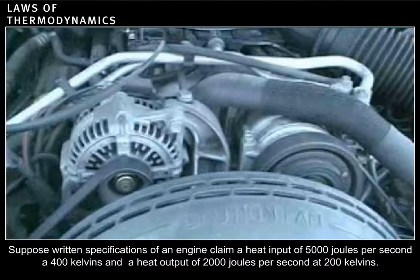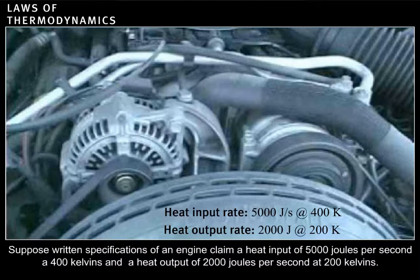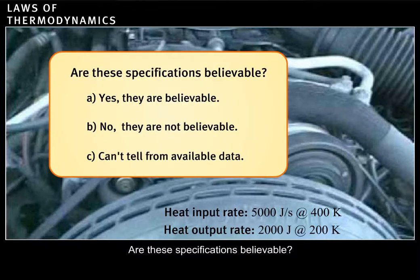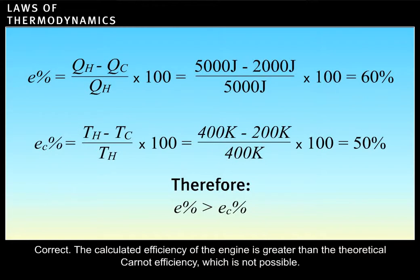Suppose written specifications of an engine claim a heat input of 5,000 joules per second at 400 kelvins and a heat output of 2,000 joules per second at 200 kelvins. Are these specifications believable? Correct. The calculated efficiency of the engine is greater than the theoretical Carnot efficiency, which is not possible.